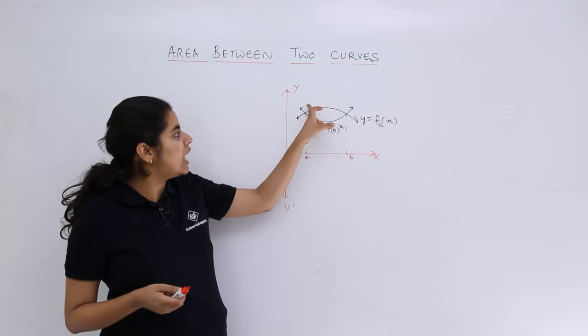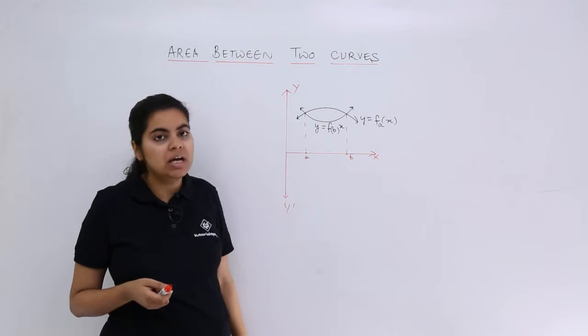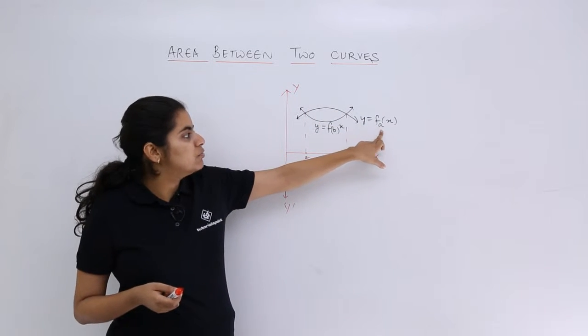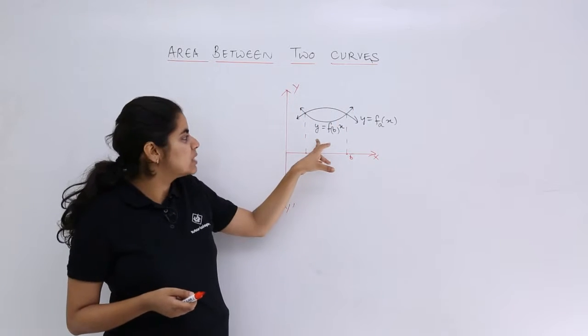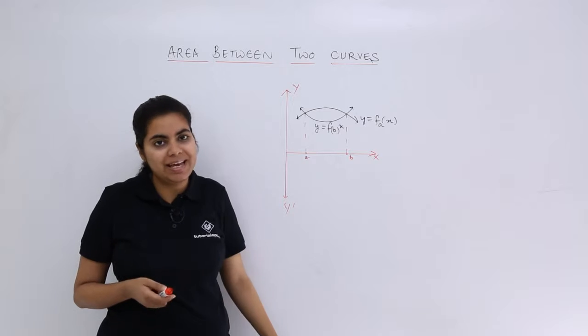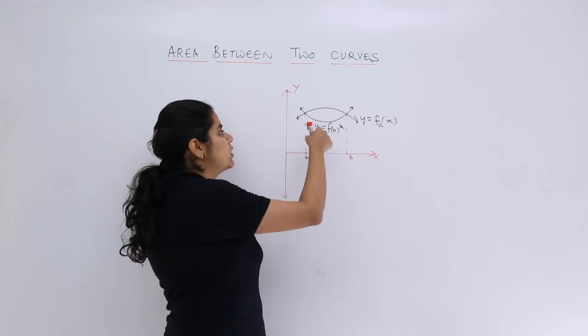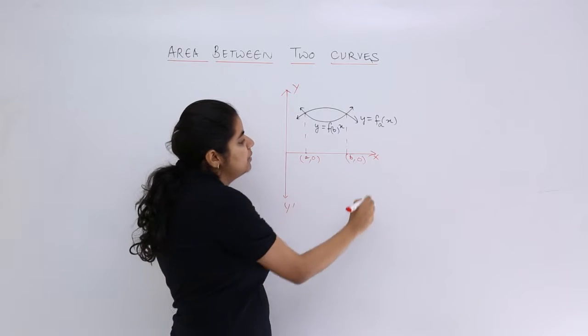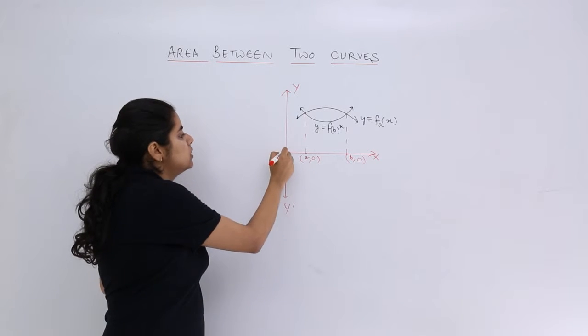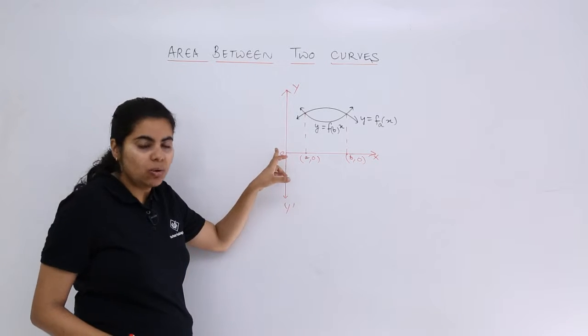Suppose as you can see in this figure, we have an above curve and a below curve. The above curve has the equation y equals f of ax, and the below curve has the equation y equals f of bx. These are the two points of intersection: the first would be a,0 and the second would be b,0. This is the origin O.